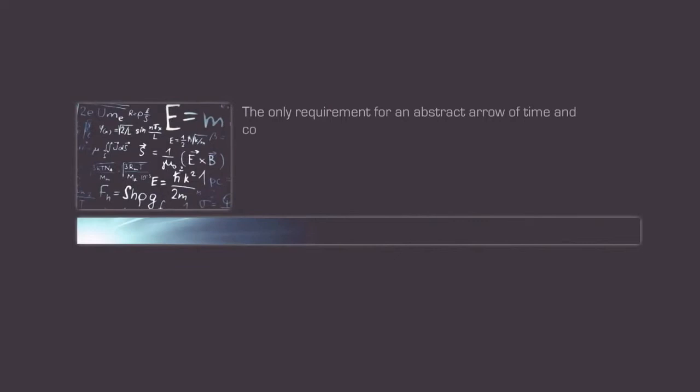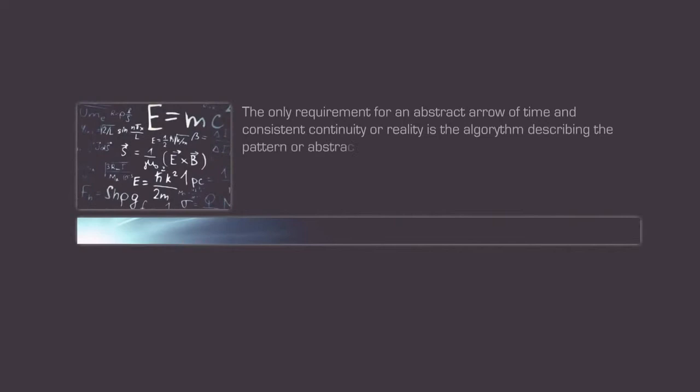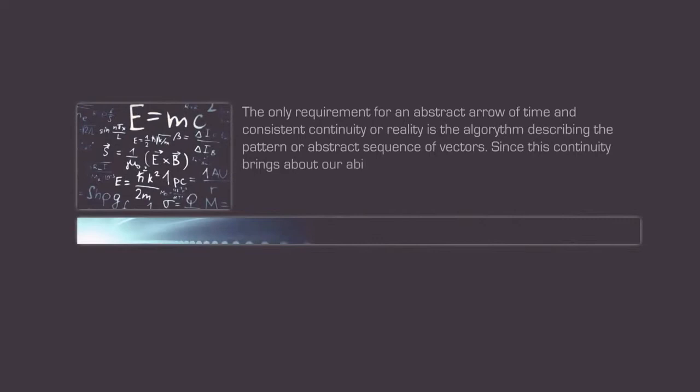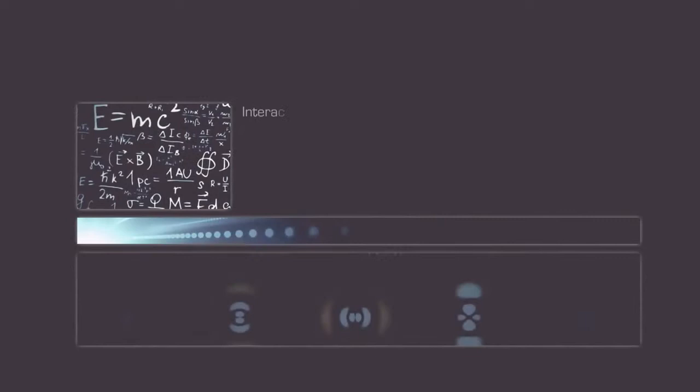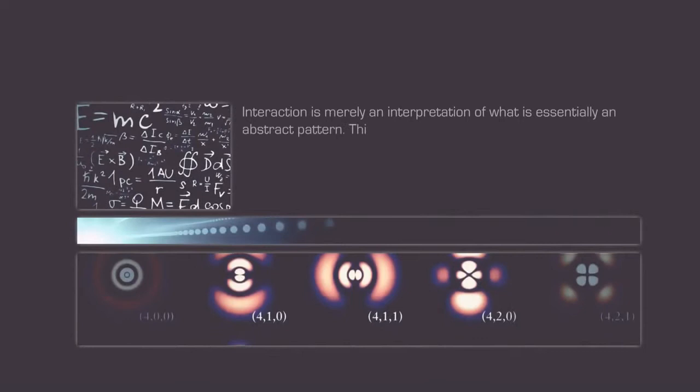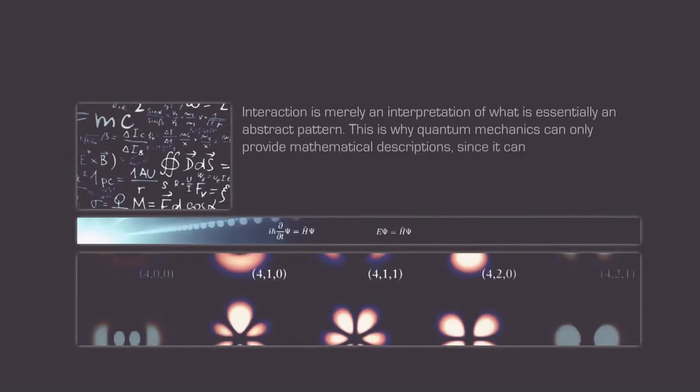The only requirement for an abstract arrow of time and consistent continuity or reality is the algorithm describing the pattern or abstract sequence of vectors. Since this continuity brings about our ability to be self-aware, it inherently makes us subject to its mathematical consequences, the fundamental laws of physics. Interaction is merely an interpretation of what is essentially an abstract pattern. This is why quantum mechanics can only provide mathematical descriptions, since it can only describe patterns within infinite probabilities.